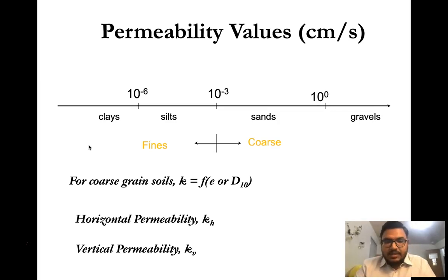The values of permeability depend mainly on the grain size. For fine-grained soil, the permeability will be less than 10 to the power minus 3 centimeter per second, whereas for coarse sand it will be more than 10 to the power minus 3 centimeter per second.